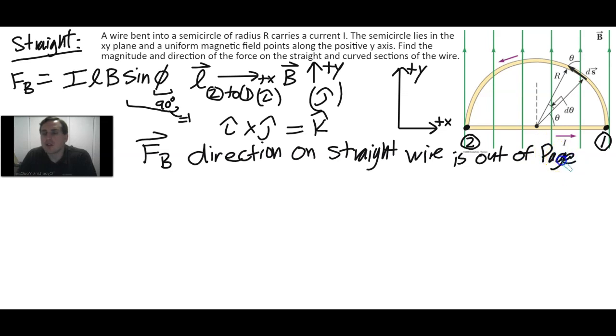The magnetic force vector direction on the straight wire is out of the page. This force should exist everywhere along this wire and this magnetic force is something that is out of the page. You could think about this magnetic force really exists at the center of mass of this wire.